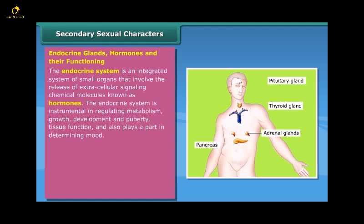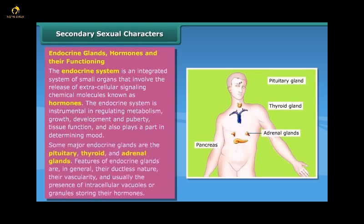The endocrine system also plays a part in determining mood. Some major endocrine glands are the pituitary, thyroid and adrenal glands. Features of endocrine glands are, in general, their ductless nature, their vascularity, and usually the presence of intracellular vacuoles or granules storing their hormones.